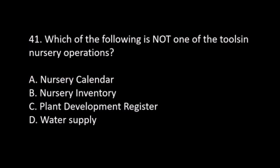Number 41. Which of the following is not one of the tools in nursery operations? A. Nursery calendar. B. Nursery inventory. C. Plant development register. D. Water supply. The answer is A.